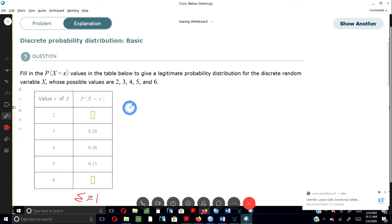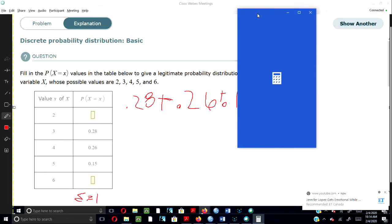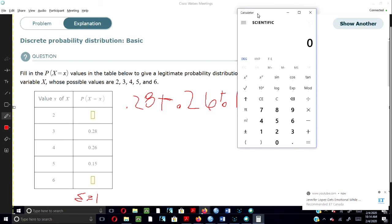So the first step is to add up .28 plus .26 plus .15. Let's pull out the calculator and add that up. .28 plus .26 plus .15 equals .69.